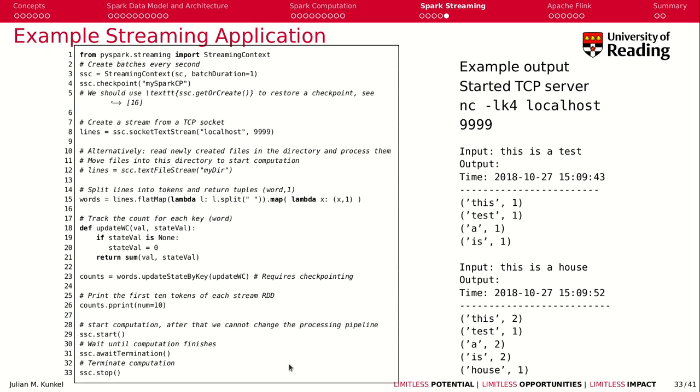I submit this program, and it will block until I stop my code, and now I can connect, for example, using netcat to my localhost server. You can see here, I gave it input, this is a test, it outputs the first 10 tokens, this is one, test is one, a is one, is is one, because we counted it, right?